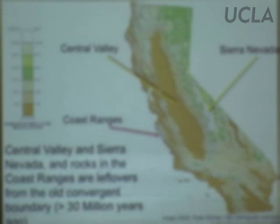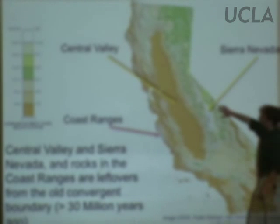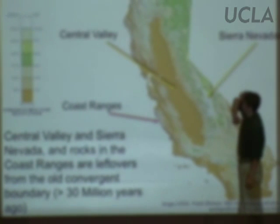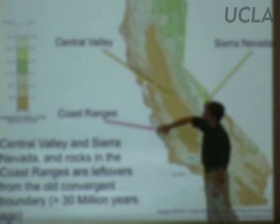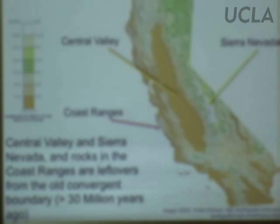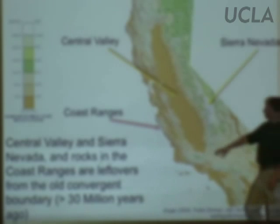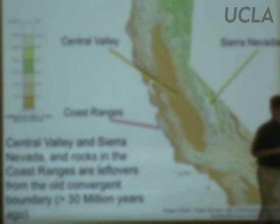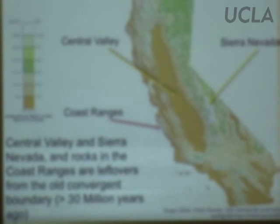So these three features — the Sierra Nevada, this big line of mountains characterized by granite; the Central Valley; and the Coast Ranges, or at least the rocks constituting them — are leftovers. These are parts of California that derive their character from when we were a convergent boundary: stuff scraped off the down-going plate, the volcanic arc, and the shallow sea in between. The old active margin.